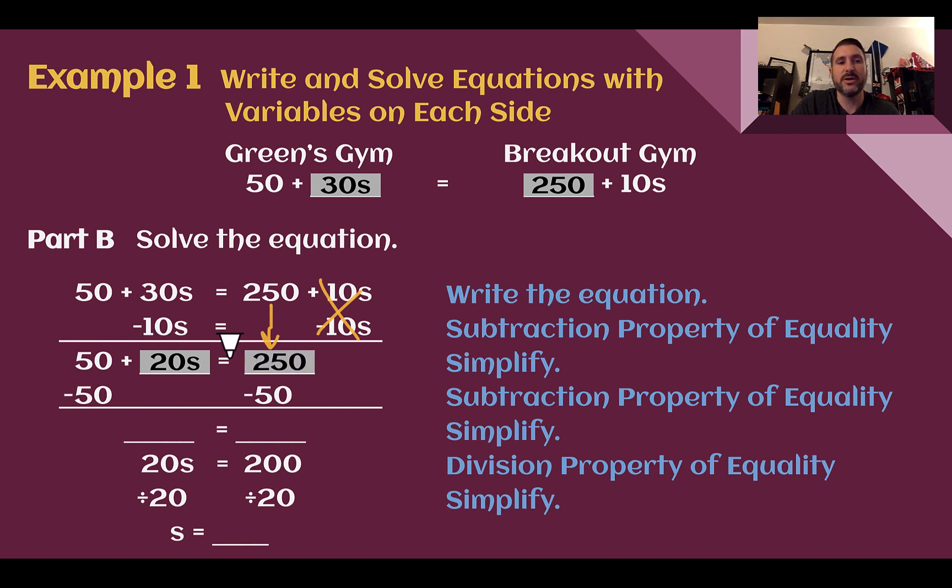50 plus 20s is now equal to 250, so subtract 50 from both sides to eliminate it off the left. I am left with 20s is equal to 200.